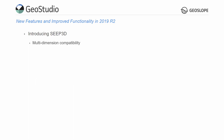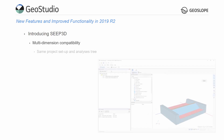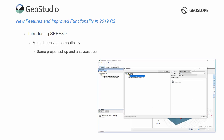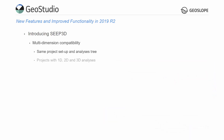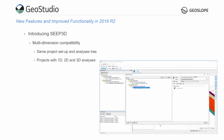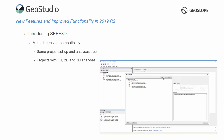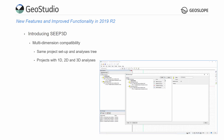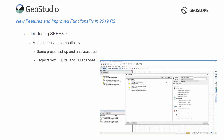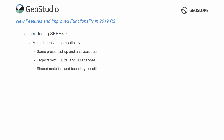GeoStudio's 3D analysis products have multi-dimension compatibility. A SEEP3D analysis has the same project definition and analysis tree as a SEEPW analysis. The improved multiple geometry support allows for the inclusion of one-dimensional, two-dimensional, and three-dimensional analyses all in the same project file. These analyses share materials and boundary conditions, saving substantial definition time.